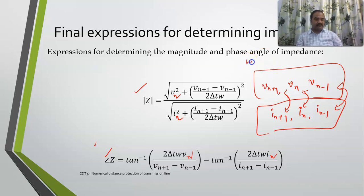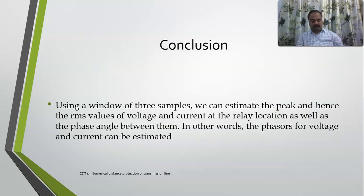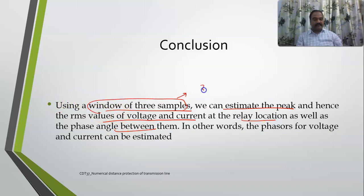Those samples must be at the same time. Apart from this, you also require the signal frequency and Δt, which can be obtained from 1/fs where fs is the sampling frequency. Using this data you can calculate the impedance, compare it with the setting value, and issue a trip signal. The conclusion is: using a window of three samples, we can estimate the peak and hence the RMS values of voltage and current, as well as the phase angle between them.